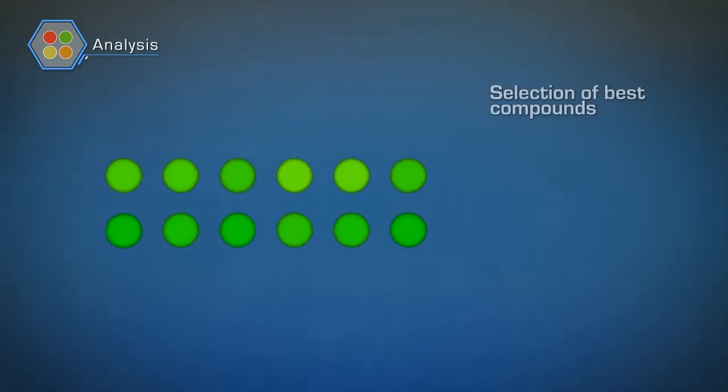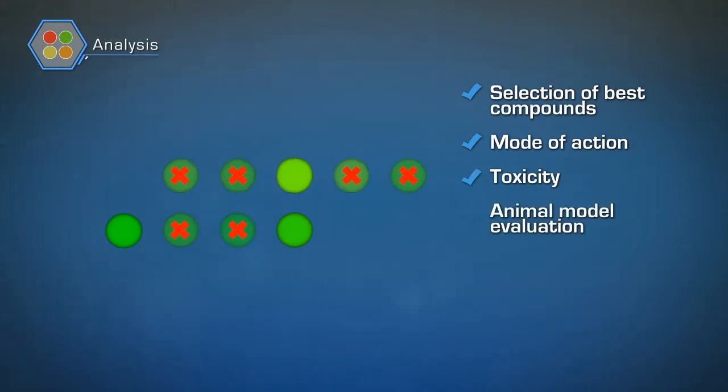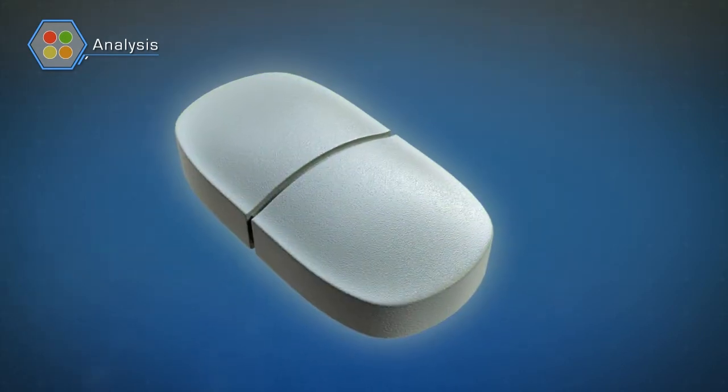For these compounds, the mode of action is then researched and secondly, their toxicity is measured. When this stage is complete, an animal model is evaluated. The final step in the process of drug screening is a clinical trial. A positive result will give rise to the next generation of drugs.